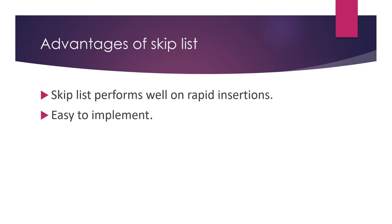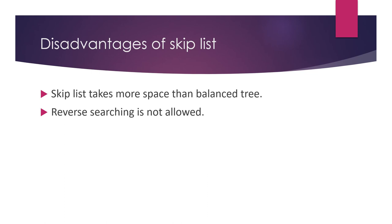Advantages of skip list: it performs well on rapid insertion — insertion takes place very fast — and it is easy to implement. Disadvantages of skip list: it takes more space than a balanced tree, and reverse searching is not allowed in a skip list. So this is about the skip list. Thank you.